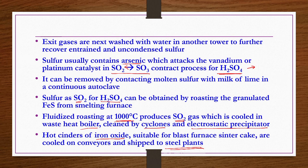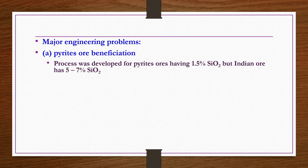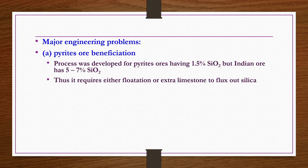Now we consider engineering problems. The first is pyrites ore beneficiation: ores contain impurities like dust, mud, metallic ferrous and non-ferrous ingredients, and other inorganic materials. Many purification steps using mechanical unit operations are done to get almost clean ore for the smelter. However, this process was developed for ore having only 1.5% silica, while Indian ore generally has 5–7% silica, requiring either flotation or extra limestone to flux out silica.